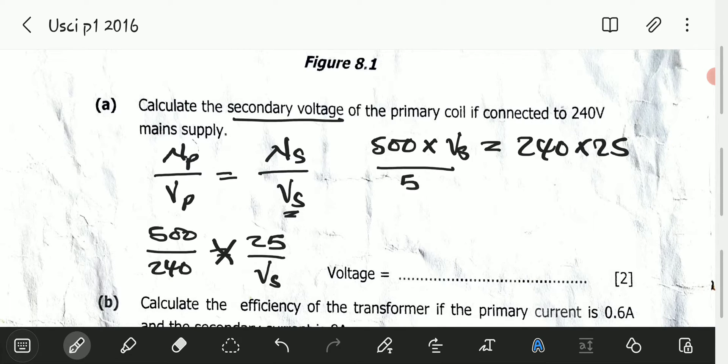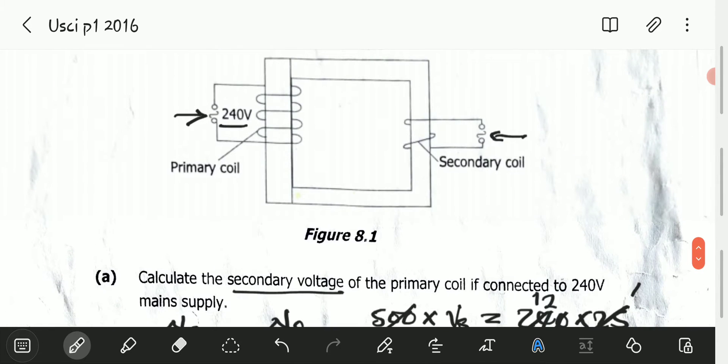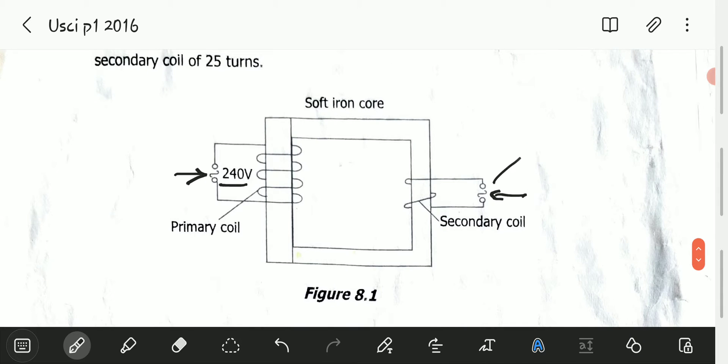I can cancel this 0 with that 0. Then 25 into 25 is 1, 25 into 50 is 2, 2 into 2 is 1, 2 into 24 is 12. So 12 times 1, which is 12. The secondary voltage is 12 volts.